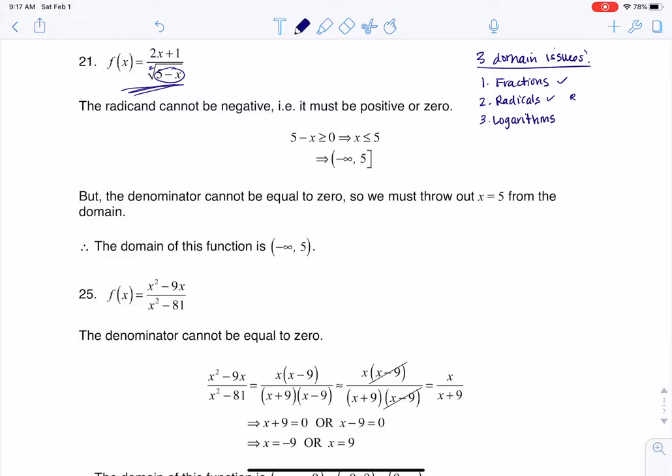I would say I need the radicand, that means stuff under the radical, to be greater than or equal to zero. But the thing is, since we also have this fraction here, I don't want the denominator to equal zero. So another way of saying that is I need 5 minus x to be strictly greater than zero.